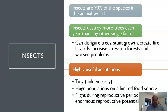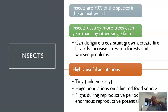The reasons insects are so destructive come down to their highly useful adaptations. They're tiny, so they're hidden easily. They have huge populations and don't need a lot of food because they're so small. Many can feed in the same place, reducing competition. They can also fly during their reproductive period, giving them enormous reproductive potential to keep multiplying. The actual number of insects out there — millions, billions, trillions — is really impressive.